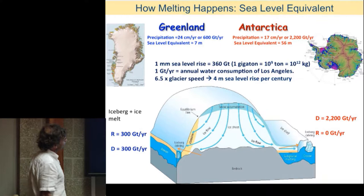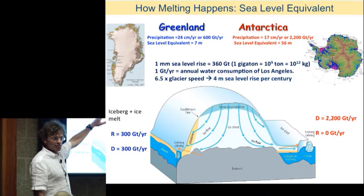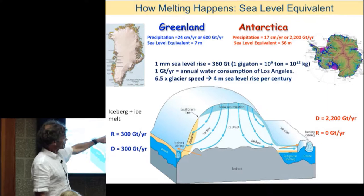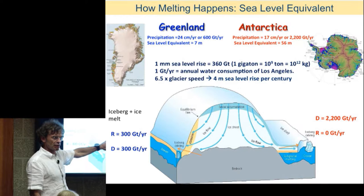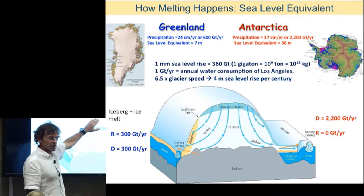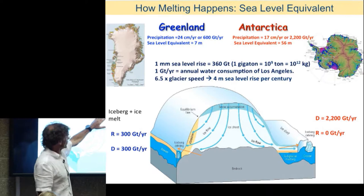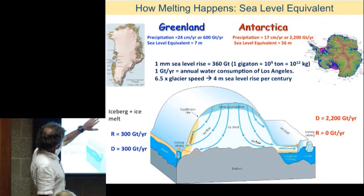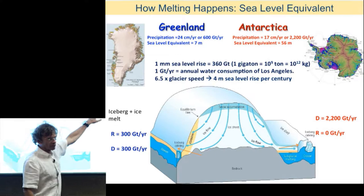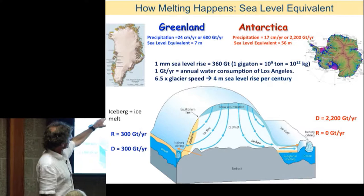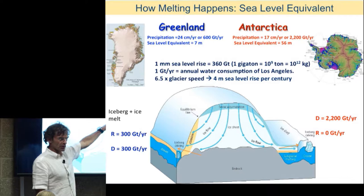Sea level is rising three millimeters per year — 30 centimeters per century. We are on a trend of one meter sea level rise per century right now. As a glaciologist, I'm not so worried about one meter per century. I'm worried about the possibility of going to four meters sea level rise per century — and it happened before, 12,000 years ago. If the glaciers flowing around the Antarctic sped up by a factor of 6.5, we would raise sea level by four meters per century. Some of these glaciers are already doing that.